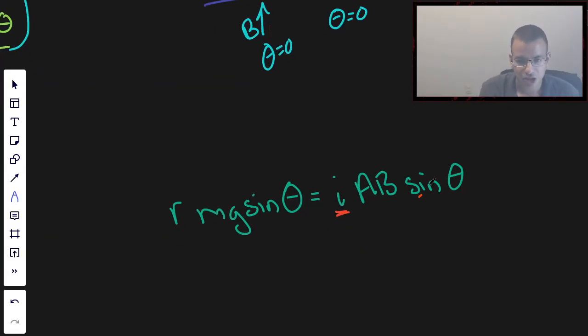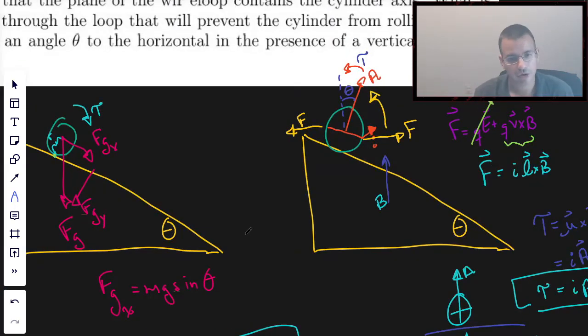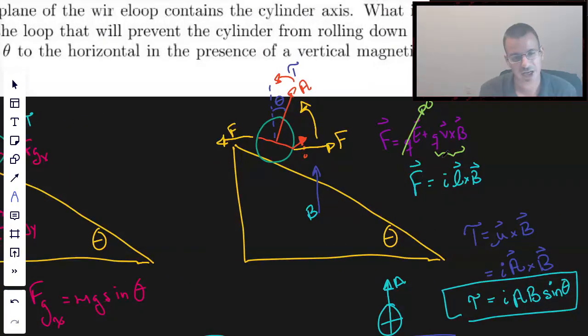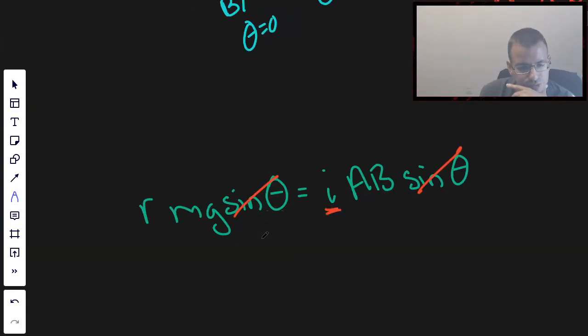So rearranging this for I. Oh, area. The area of this coil is going to be the diameter right here 2R times L which is the length of that. So A equals 2×R×L. Is that reasonable? I'll say that's reasonable. So we have R×M×G equals area times 2R times length times B. There we go. Now the radius cancels which is convenient because I don't think they give it to us.